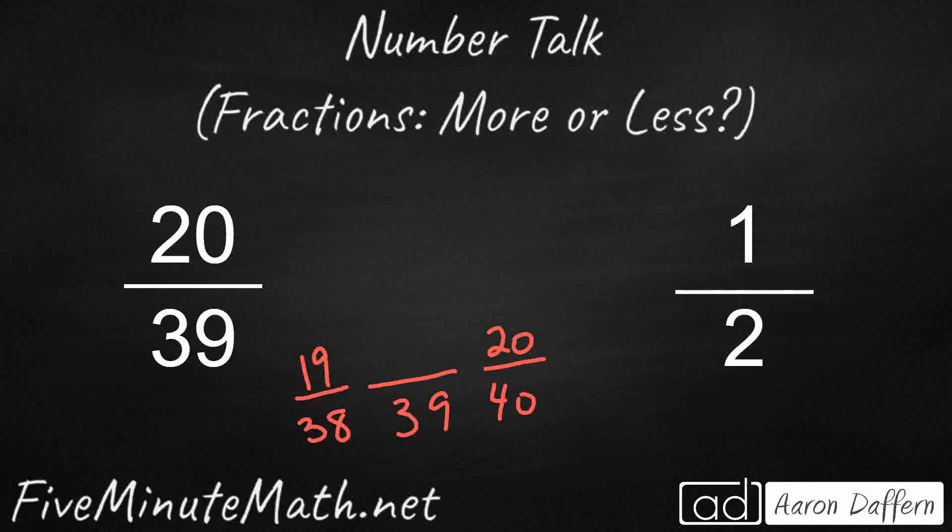So half of 39 is going to sit right between 19 and 20. What number sits between 19 and 20? Well, that's where we need decimals, right? We need 19 and 5 tenths or 19 and a half. So let's look at it this way. Half of 39 is going to be 19 and a half or 19.5.